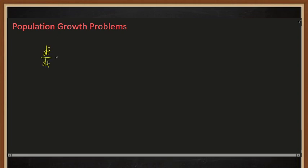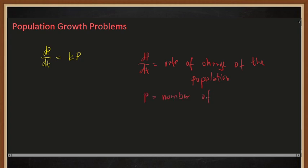For this, we'll use the differential equation dp/dt = kp, where dp/dt is the rate of change of the population, p is the number of inhabitants or the population at any given time, and k is the constant of proportionality.